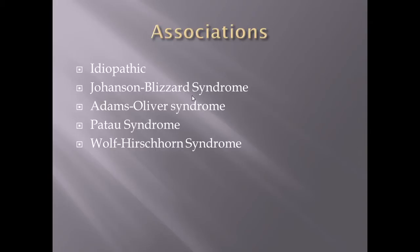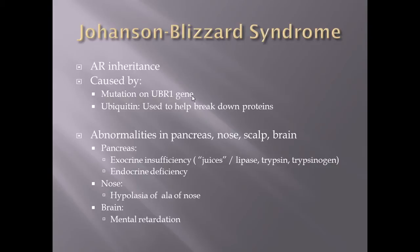Let's start with Johanssen-Blizzard syndrome. It has an autosomal recessive inheritance, meaning both parents will have to carry a recessive allele and pass it along. It is caused by a mutation on the UBR1 gene — the ubiquitin gene — which is involved in the ubiquitination process, used to flag and ultimately break down proteins in the body. Everyone has a ubiquitin system, and that's how used proteins are eliminated.